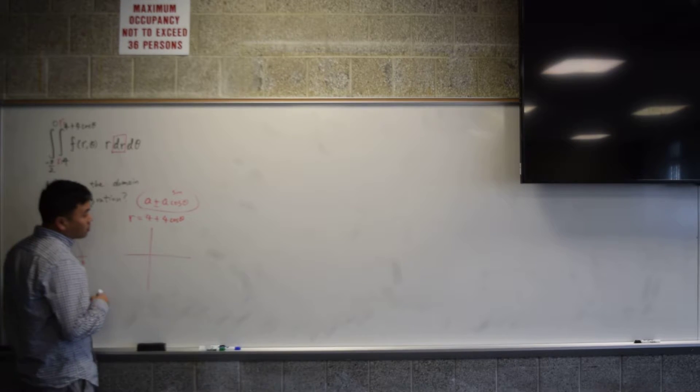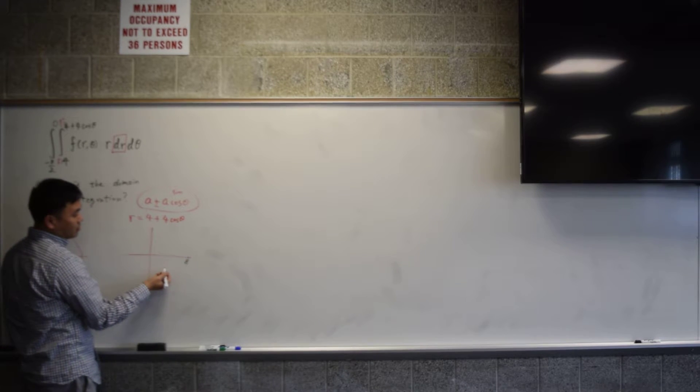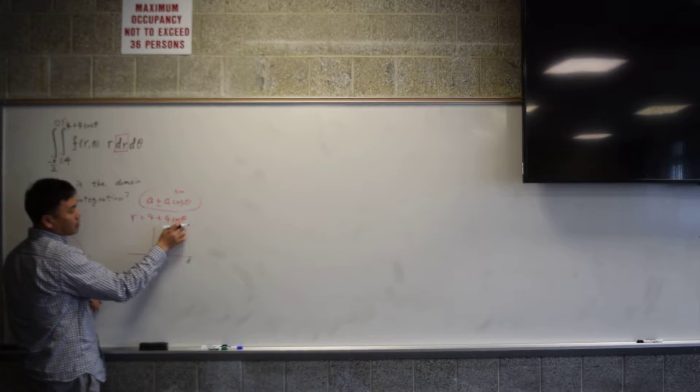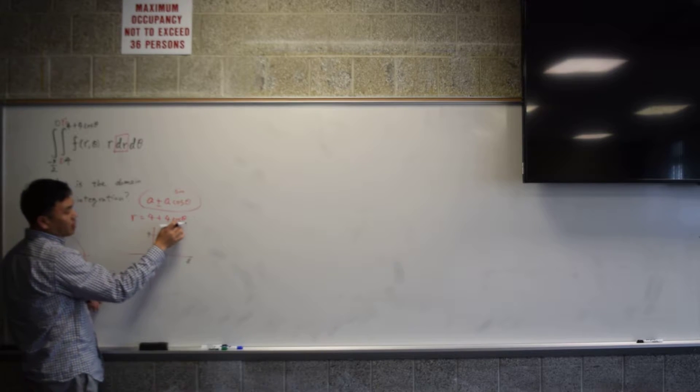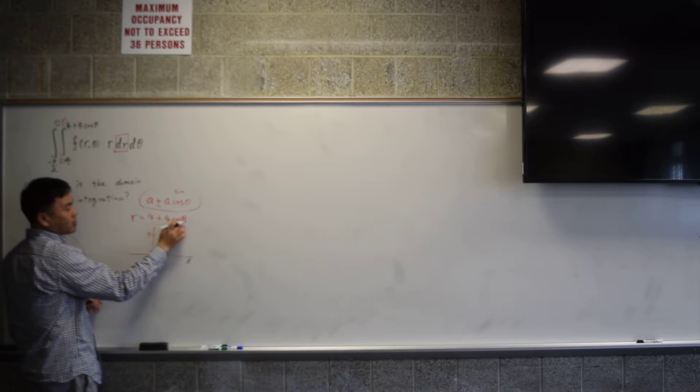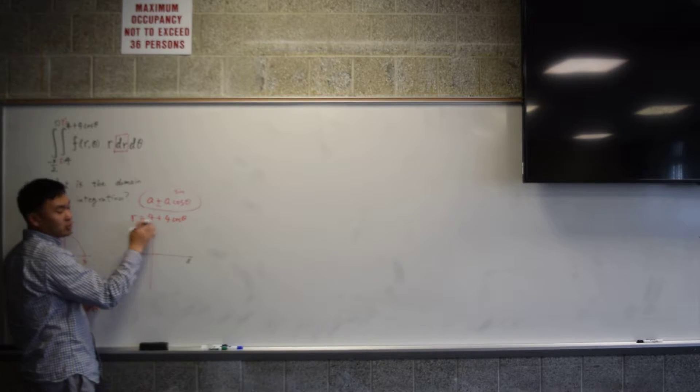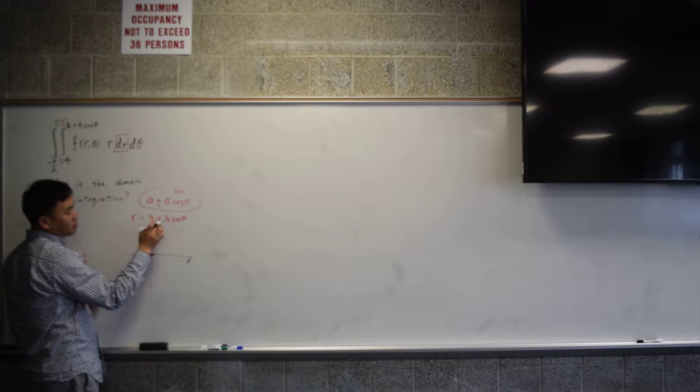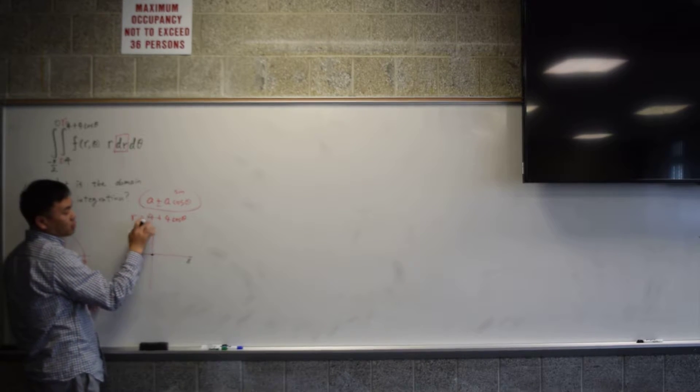So if you plug in 0, you get 4 plus 4 times cosine 0 is 1, 4 plus 4, that's 8, so you have 8. And if you plug in 90 degrees, you get cosine 90 degrees, which is 0. So you get 4 plus 0, which is just 4. And then when you have theta as 180 degrees, cosine 180 degrees is negative 1. So you have 4 plus 4 times negative 1, which gives you 0. And then when you have 4 plus 4 cosine 270 degrees, that's cosine 270 is 0, so you get 4.